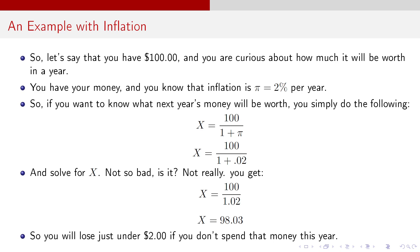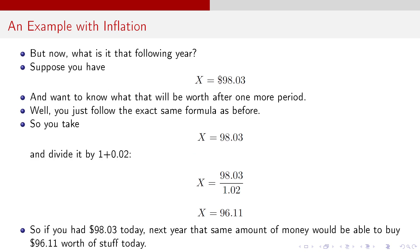Now, let's say you have $100, right? And you're curious about how much it's going to be worth in a year. Well, you have your money, and you know inflation is 2% per year. So we'll label inflation as pi. Now, I don't know about you, but I remember back when inflation was 2% a year, and that was lovely. Now it's like 3% a year, and that sucks. But at least it isn't, you know, the almost 10% that it was a year and a half ago. So things always looking on the up and up. If you want to know what next year's money is going to be worth, well, you can just simply do the following. You do 100 divided by 1 plus the inflation rate. So you get 100 divided by 1 plus .02, 100 divided by 1.02, which gives you 98.03. So you lose a little under $2 if you don't spend that money this year. So that $100, if you hold on to it, well, it's still $100 next year. It's just it only buys $98.03 worth of goods today, next year. Because why? It lost value.